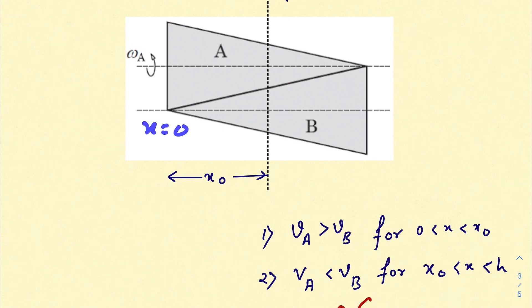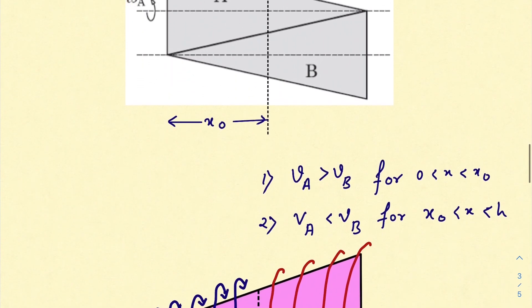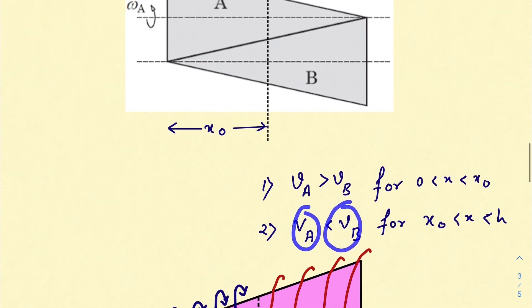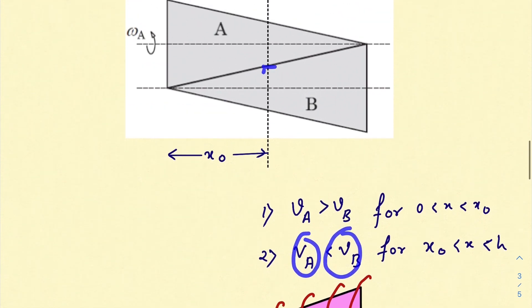Velocity for the edge points on cone A is greater than velocity of the edge points for cone B till x equals 0 to x equals x_0, and the same thing: v_A is less than v_B for x_0 to h.